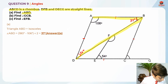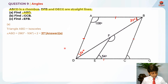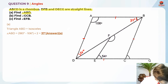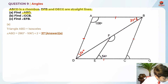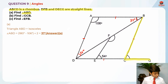So the answer for Part A is 37 degrees. Now for Part B, find angle GCB. GCB is over here — G over here, C over here and B over here. In order to find this, we know one property of rhombuses: opposite angles are equal. So this angle is also 106 degrees.